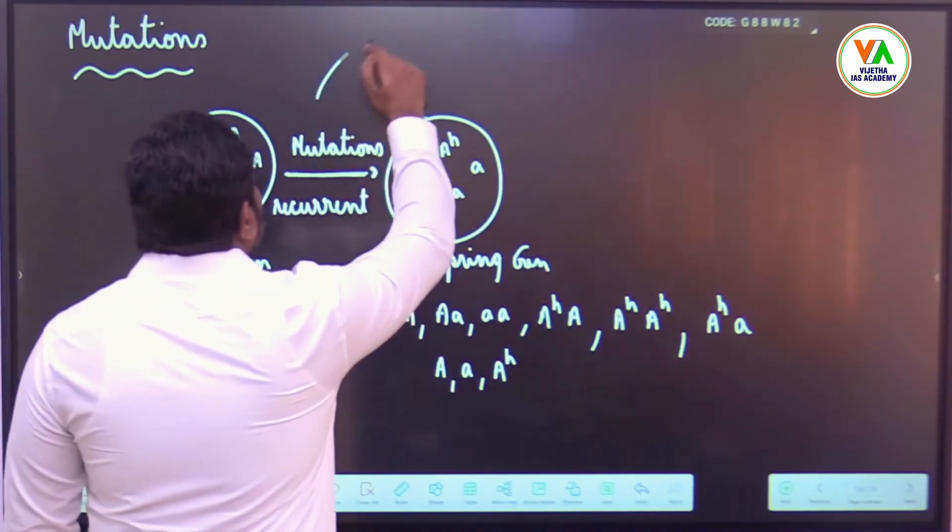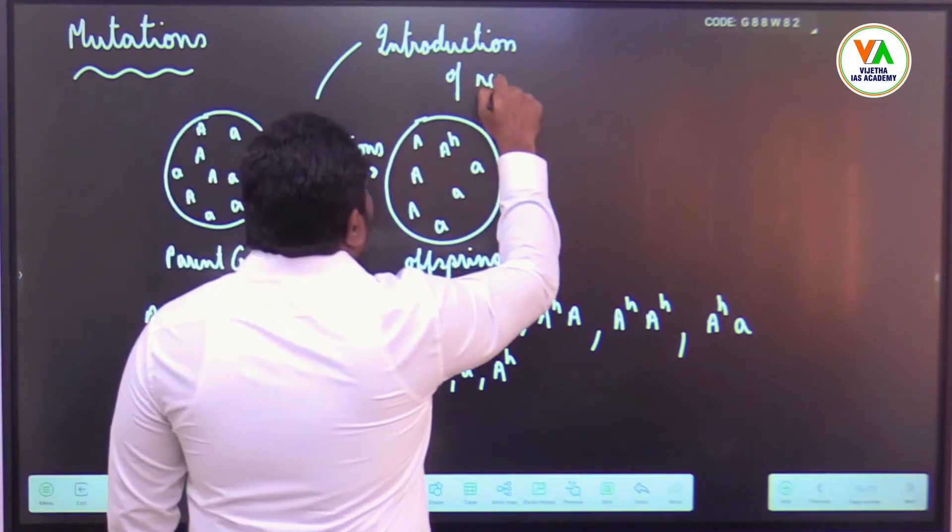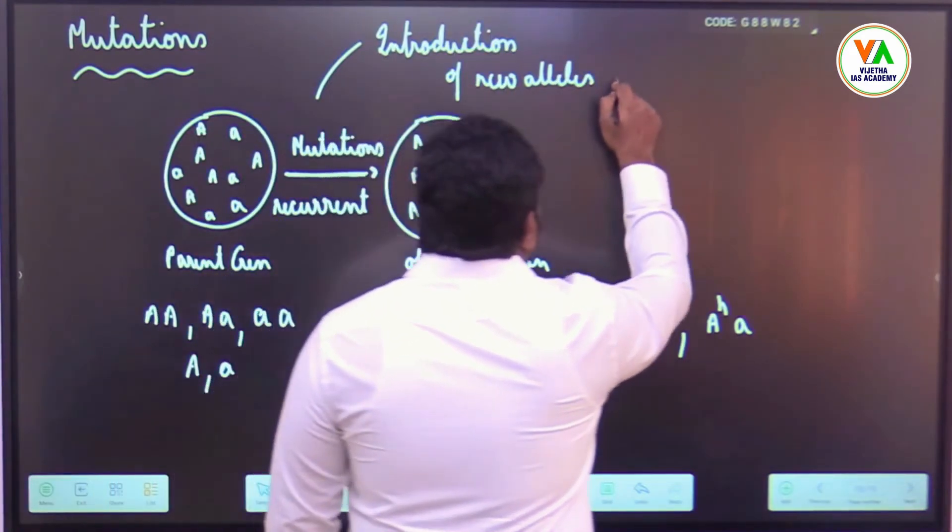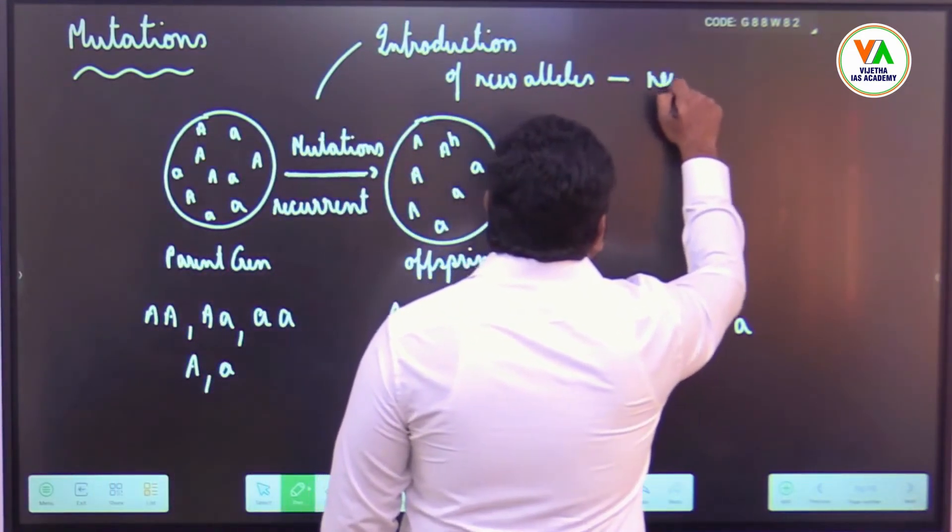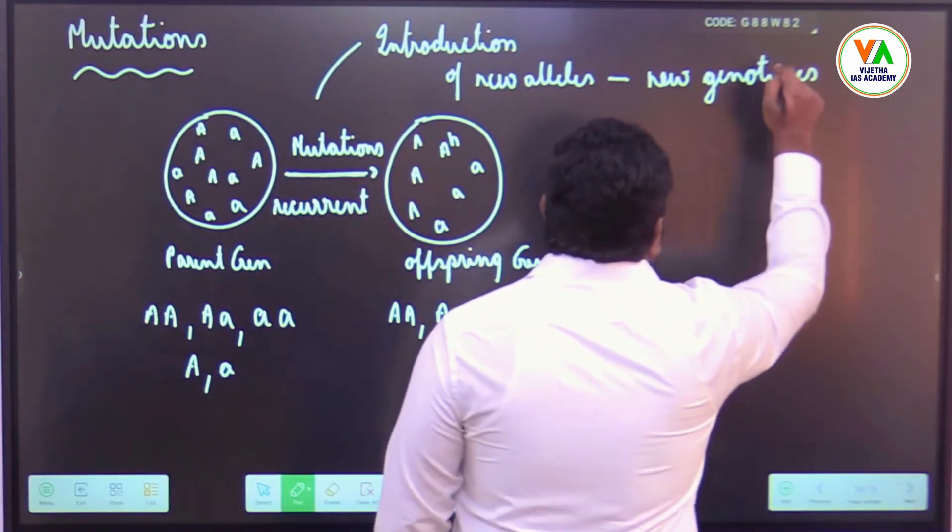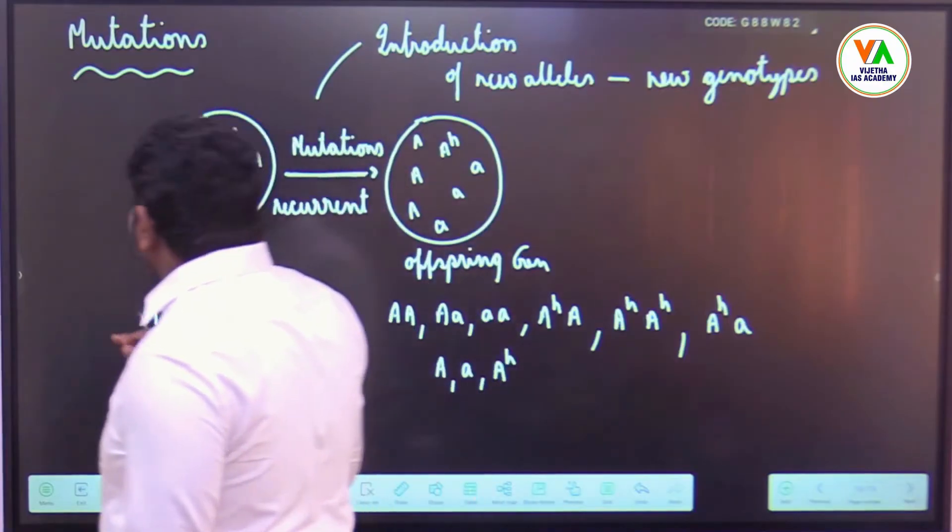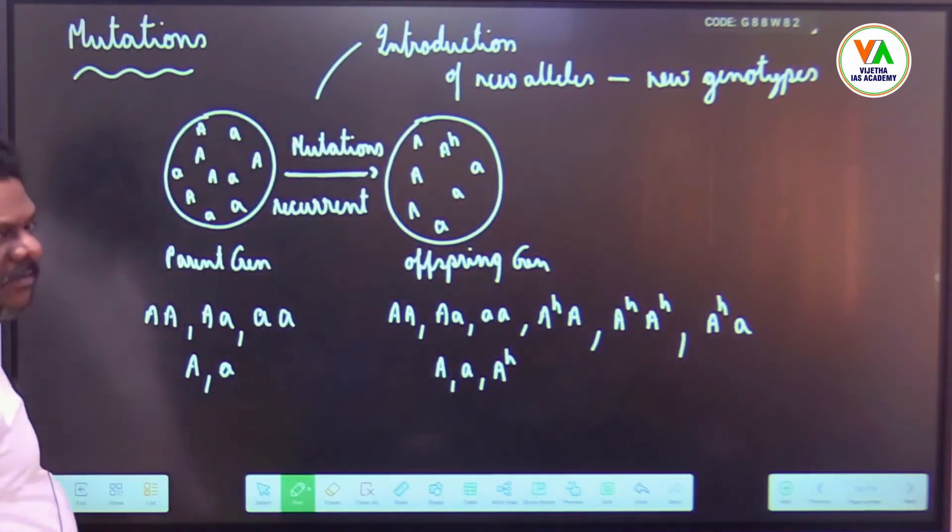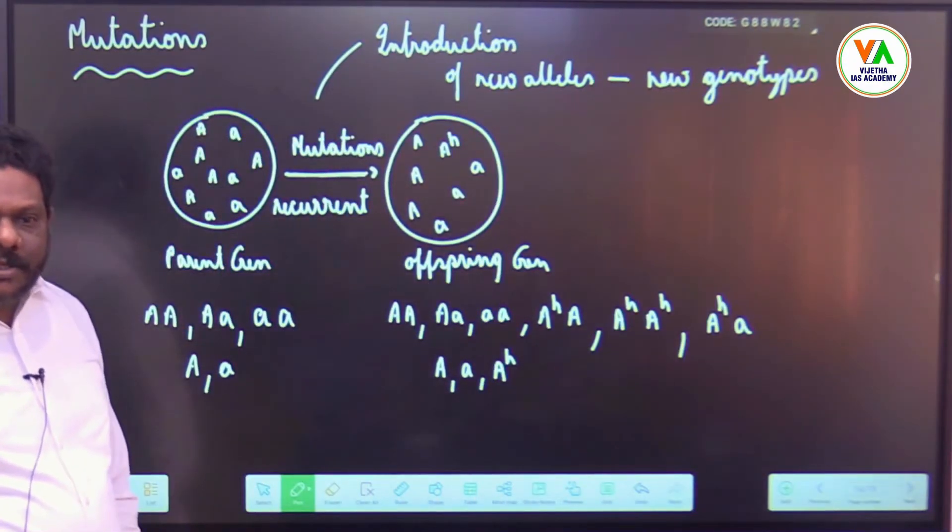Mutations led to introduction of new allele and as a result, because of introduction of new allele, introduction of new genotypes, yes or no? And as a result what will happen? The frequency of the earlier alleles or genotypes will decrease.